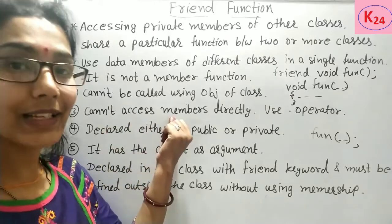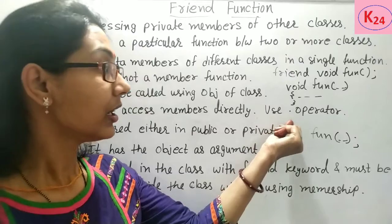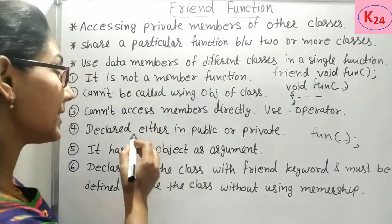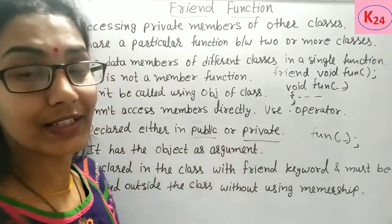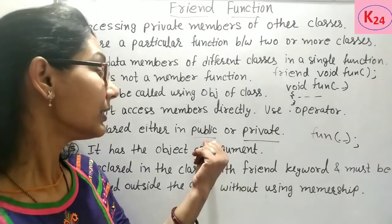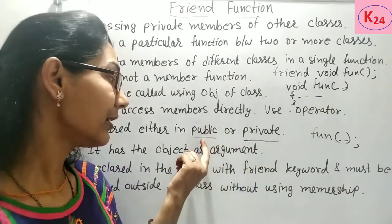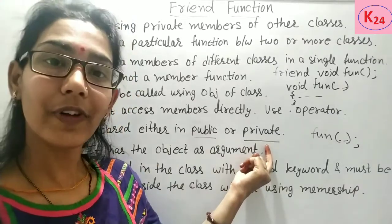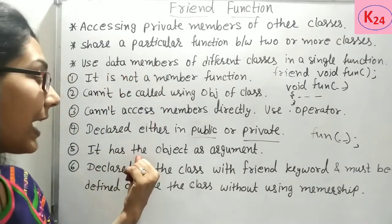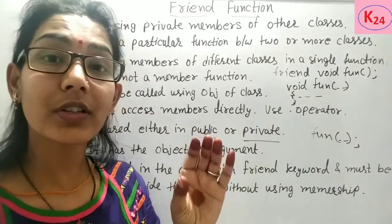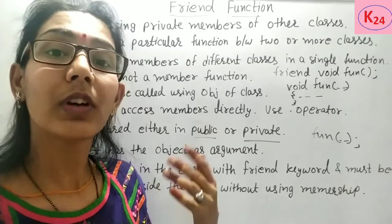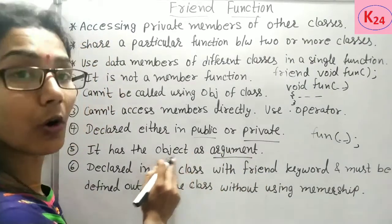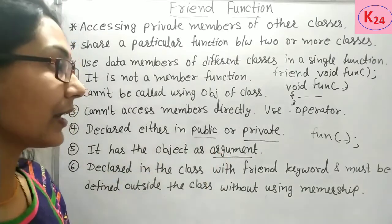Third, it cannot access members directly — we have to use the dot operator to access the data members. Fourth, the friend function can be declared either in the public section or private section of the class. Because it is not a member function, this does not affect the meaning of the code — both placements have the same meaning for the friend function.